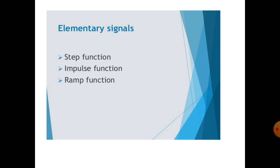In today's class we are going to discuss basic elementary signals. We have so many elementary signals: the step function, also called the unit step signal; the impulse function, also called the impulse signal; and the ramp function, also called the ramp signal. These are the elementary signals in signals and systems. Each signal has some condition and property — if it satisfies the condition, it is called a step function, impulse function, or ramp function.